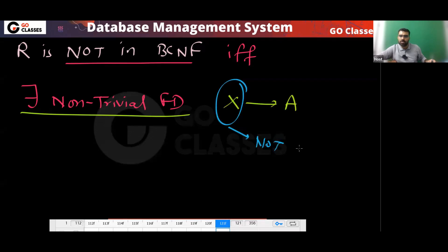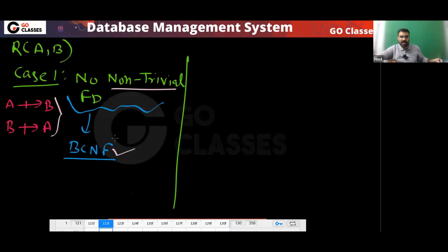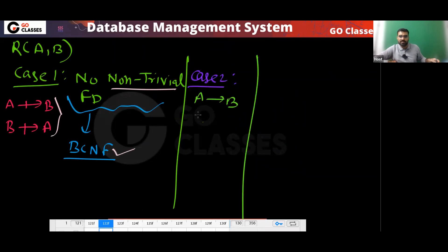So this type of non-trivial FD — where X is not a superkey — must exist for a BCNF violation. If you have no non-trivial FD, then automatically your relation will be in BCNF. Case two is that A determines B. This is your FD: A → B.